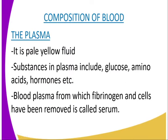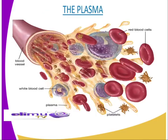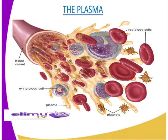The blood plasma is a pale yellow fluid consisting of water, which is at least 90%. So it is a yellow fluid, as you can see from our diagram. It consists of 90% water, in which a variety of substances are suspended and others dissolved.